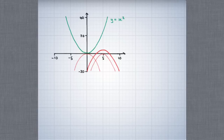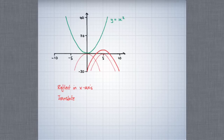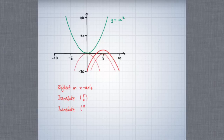So let's write down those steps. The first was to reflect in the x-axis. The second was to translate five units to the right, five units parallel to the x-axis — that's the translation with vector (5, 0). The final step was to translate parallel to the y-axis, so that's a translation with the vector (0, 4).